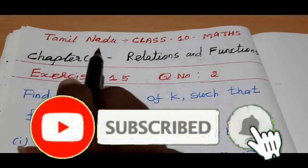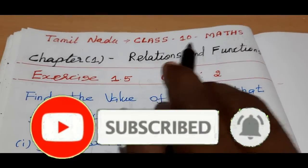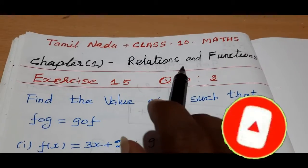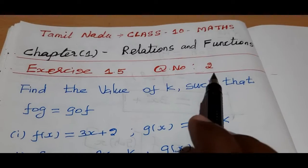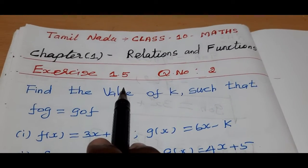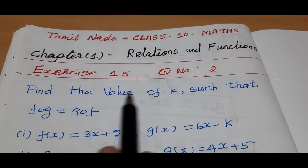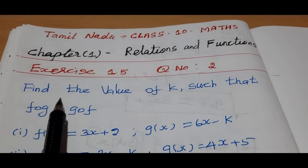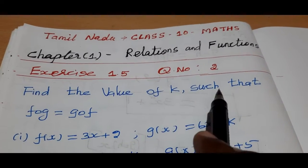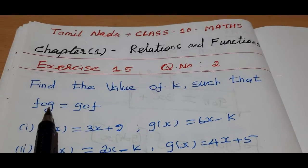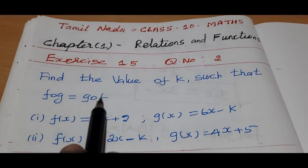Hi students, let's learn from the new syllabus class 10th maths chapter 1 relations and functions, Exercise 1.5, question number 2. Find the value of k such that f dot g is equal to g dot f.